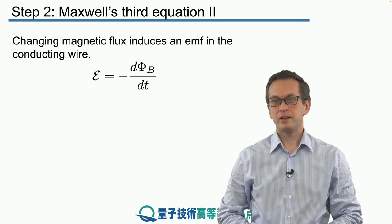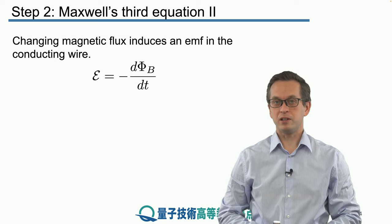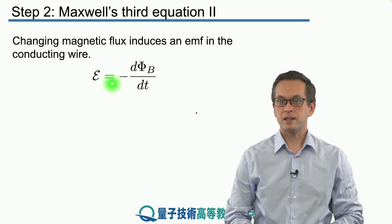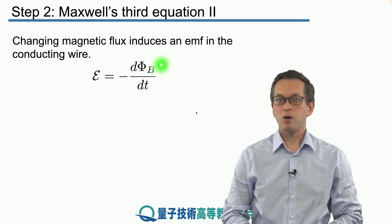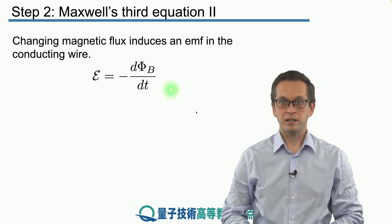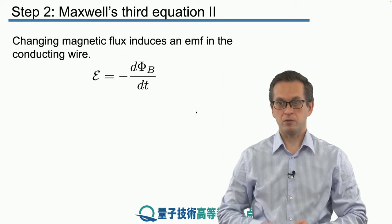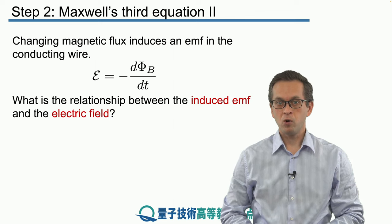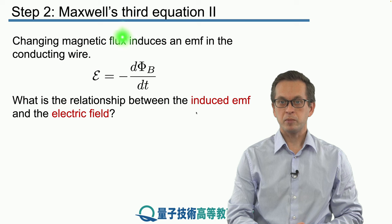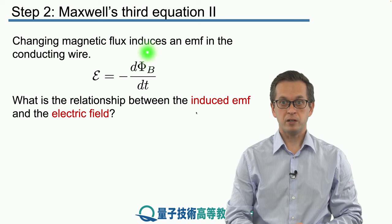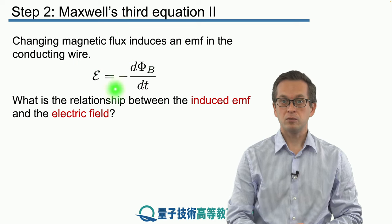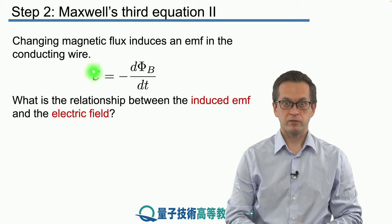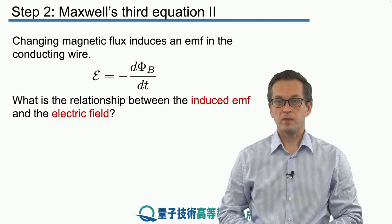We saw that the changing magnetic flux induces an EMF in the conducting wire. And the relationship between the induced EMF is that it equals the negative of the rate of change of the magnetic flux going through the area of the wire. Our goal is to relate this magnetic flux, which can be expressed in terms of the magnetic field, and relate it to an electric field, which is some function of the EMF.